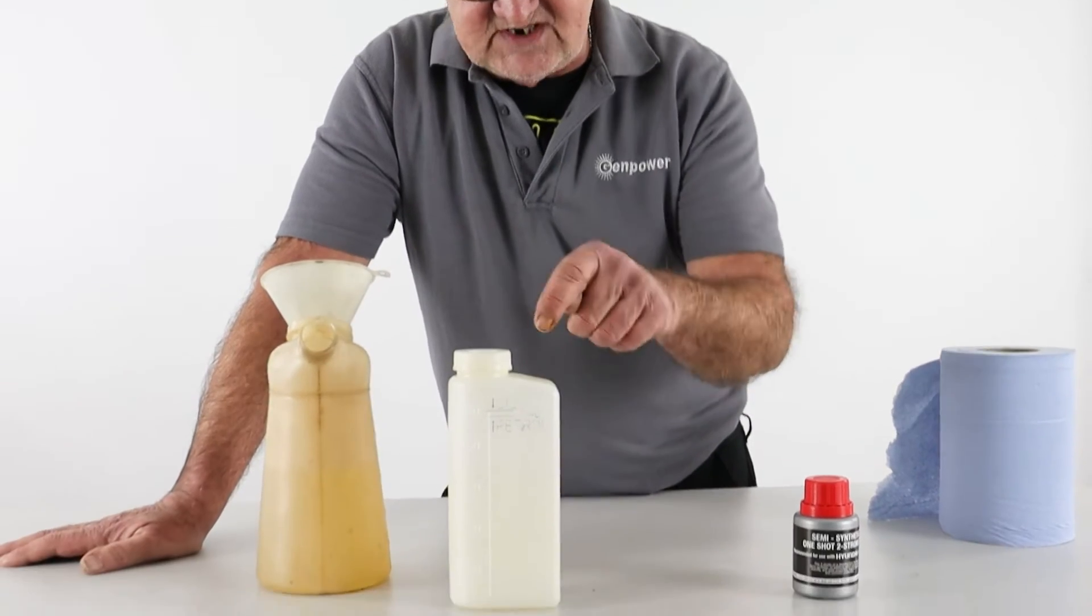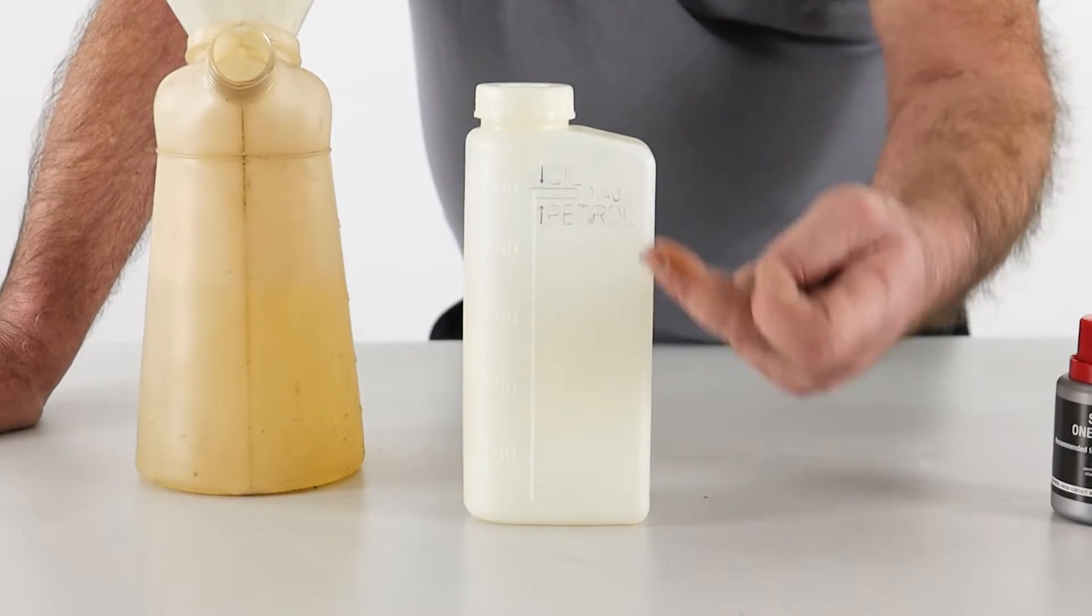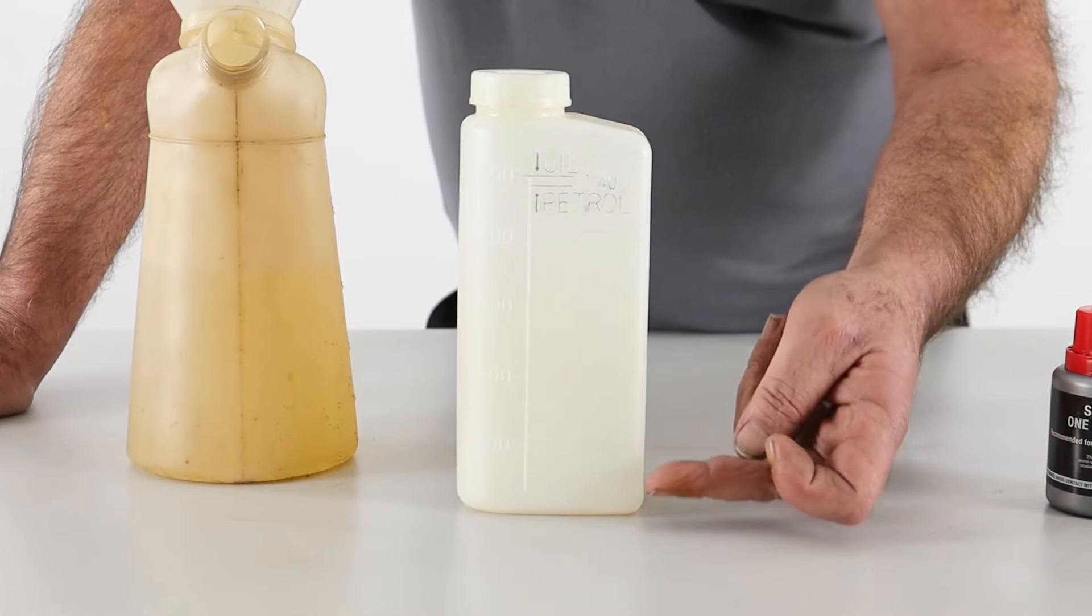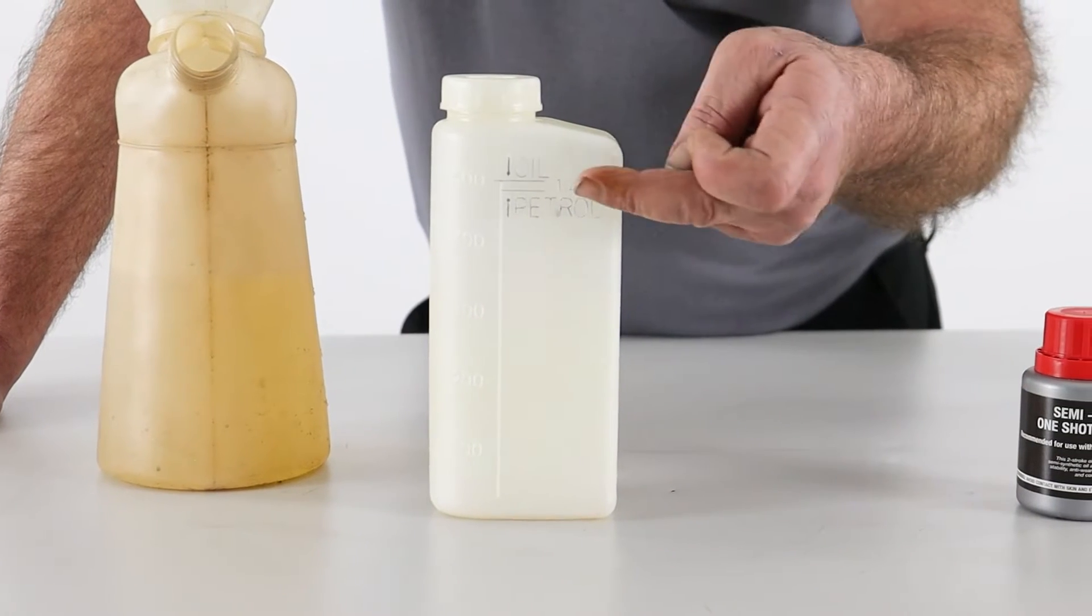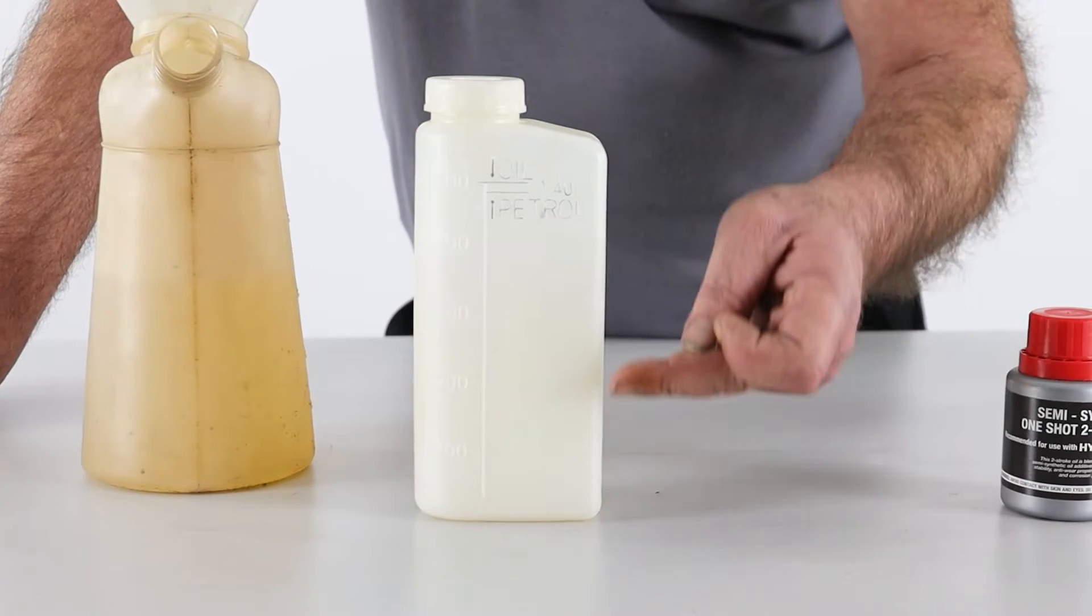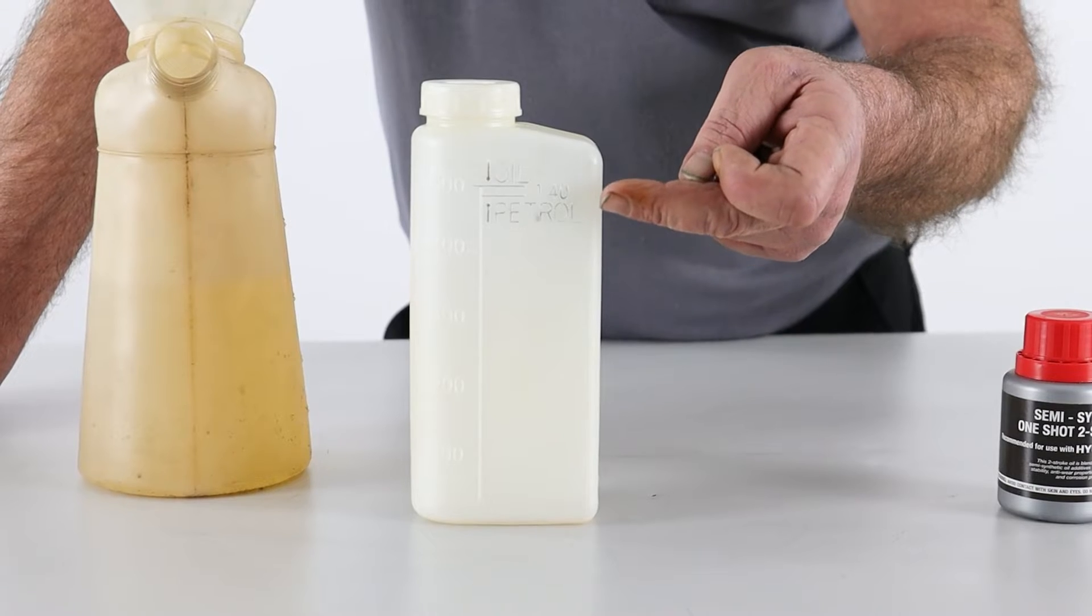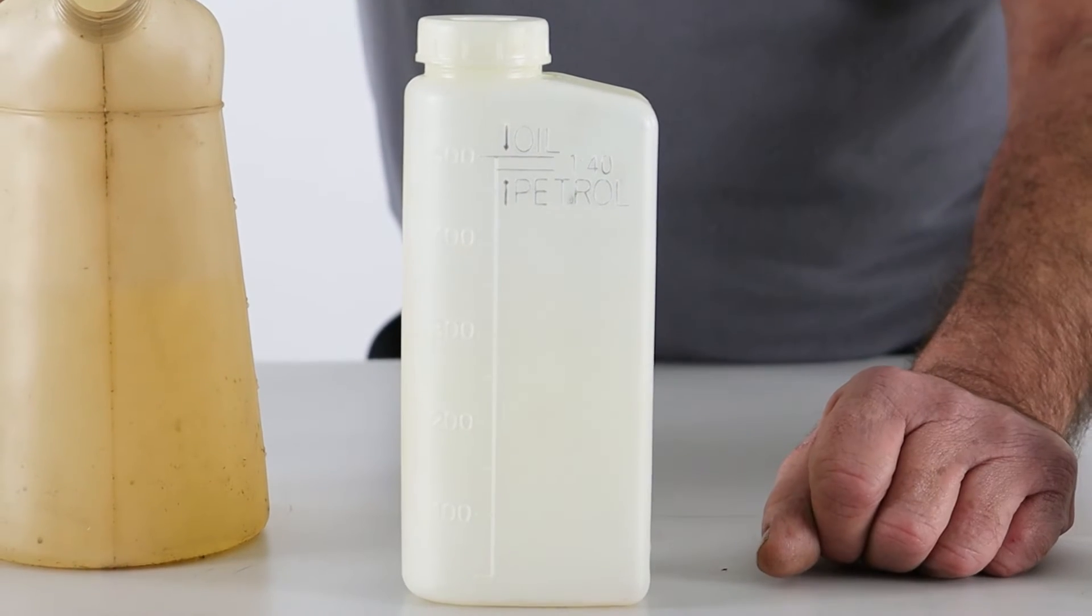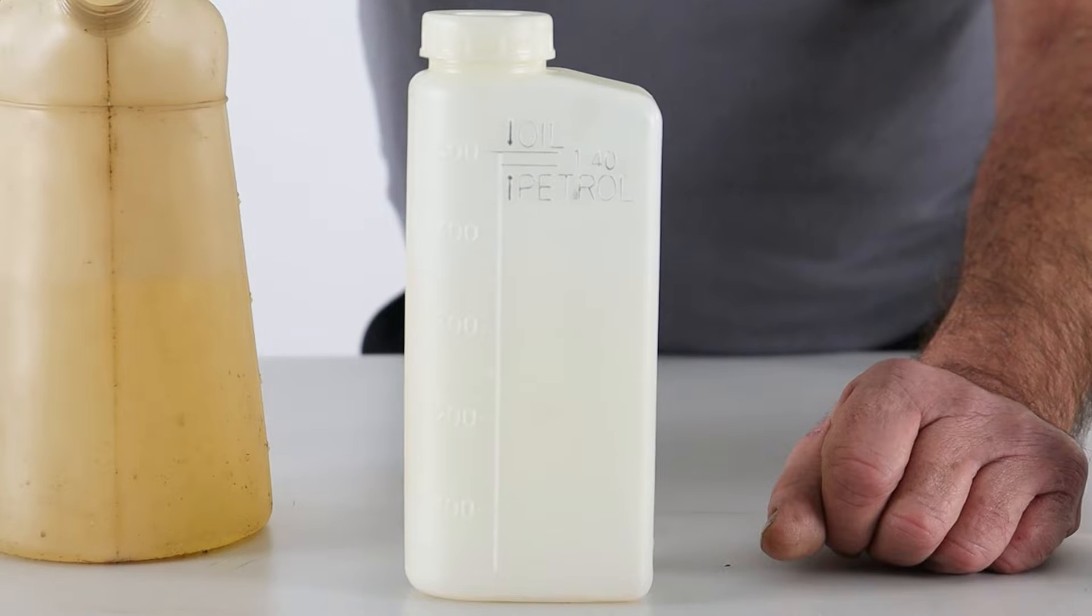So I've got a little mixing jug here that comes with your machine. I've highlighted the graphics on it just to make it easier for the camera. As you can see, there's two lines in this zone here and we need to fill this jug up with fresh unleaded petrol to the lower line. As you can see, there's a little arrow that says petrol. So I'll go ahead and do that now.